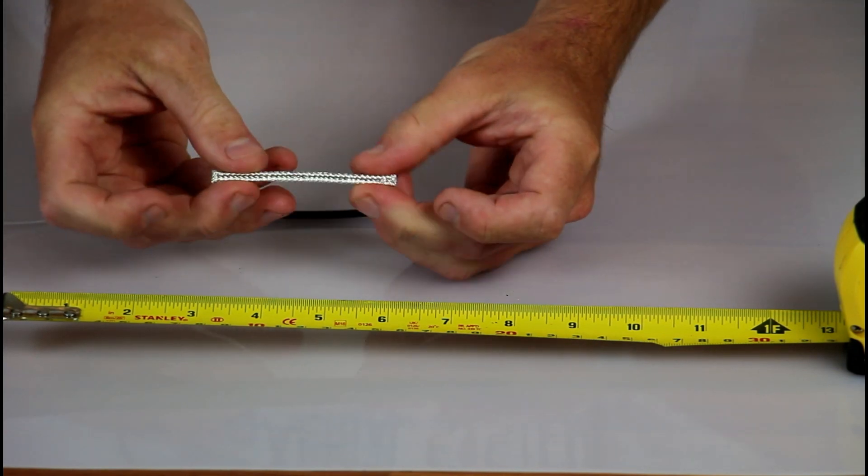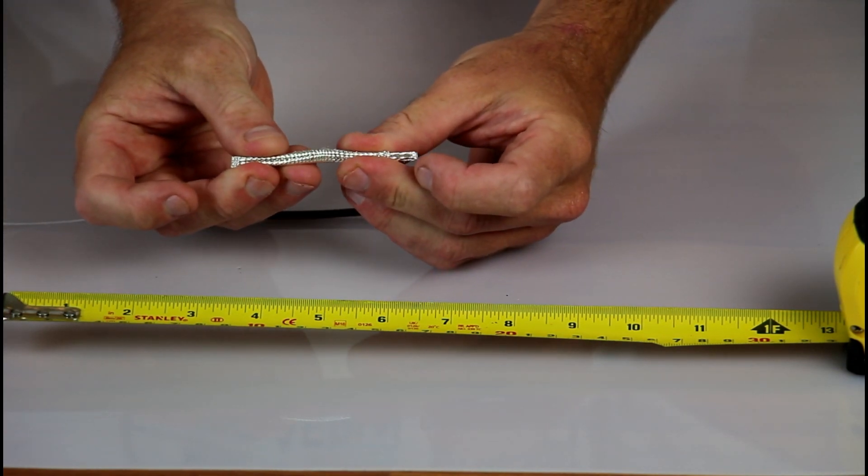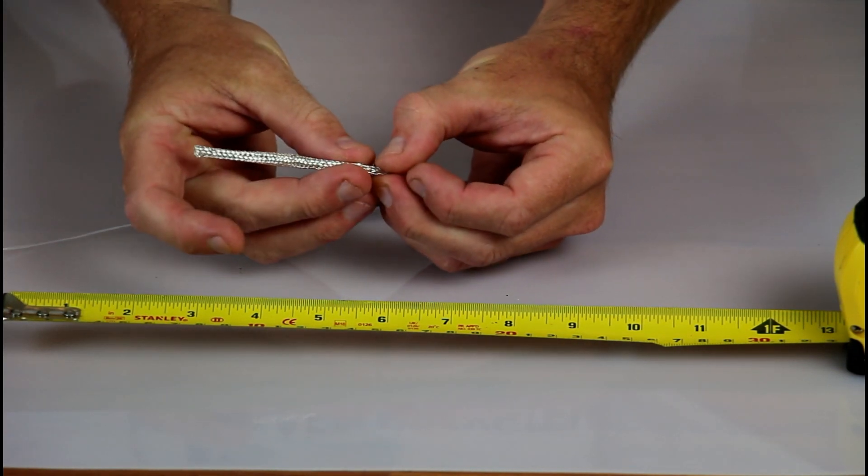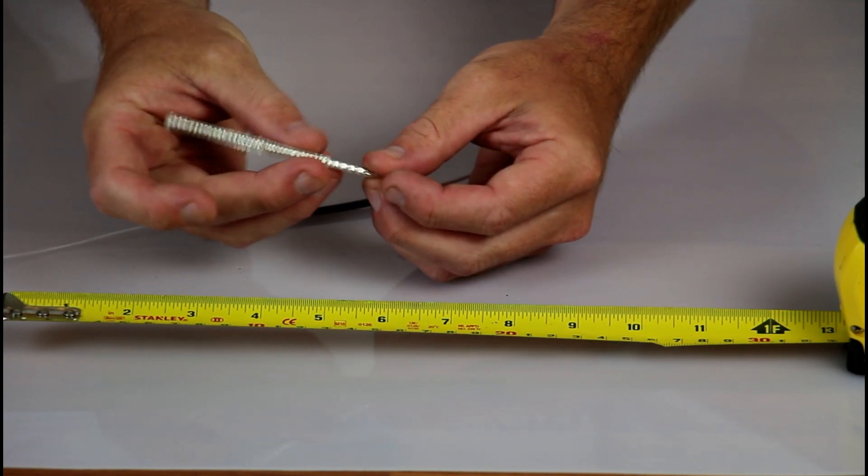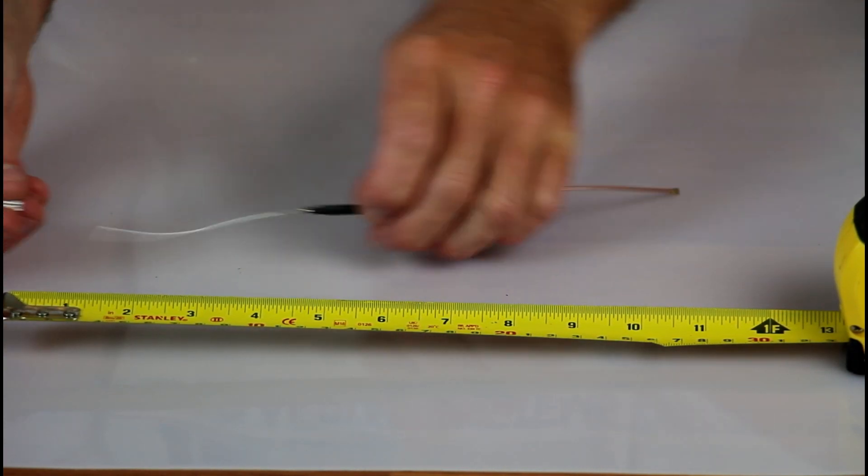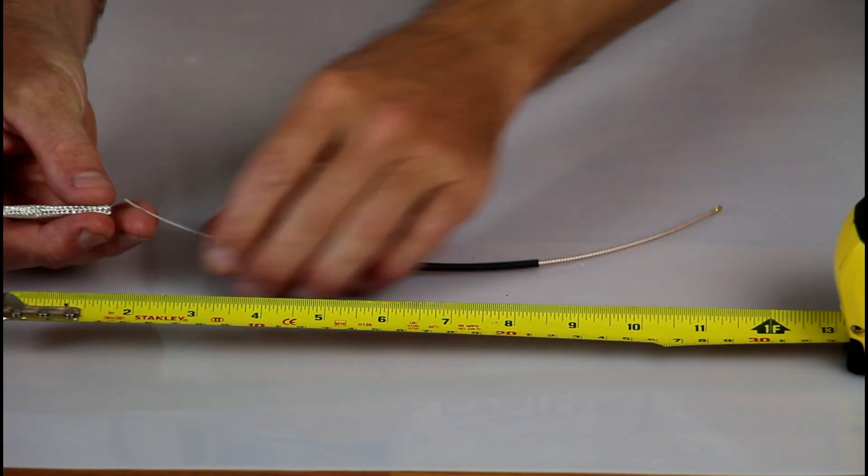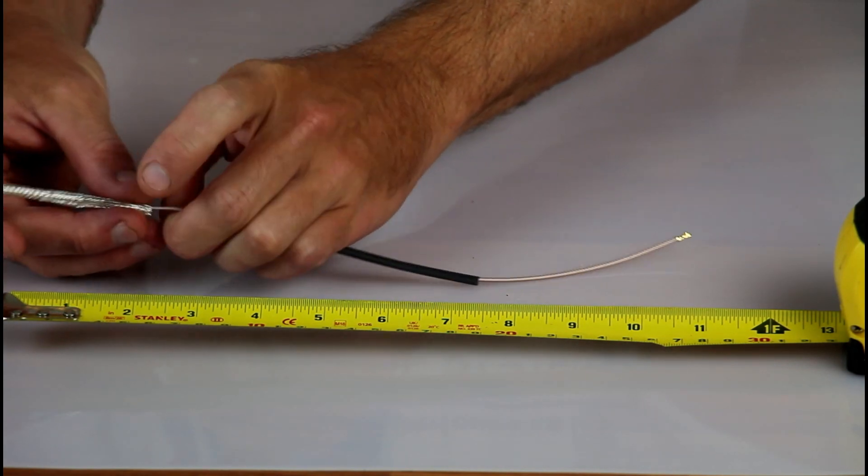You'll want to remove the outer shield from your RG 142 and the best way to do this is simply to push it together a little bit to loosen the tension and then gently slide it off. Be very careful not to compress the opening because you need to slide your coaxial cable therefore your antenna through that hole.